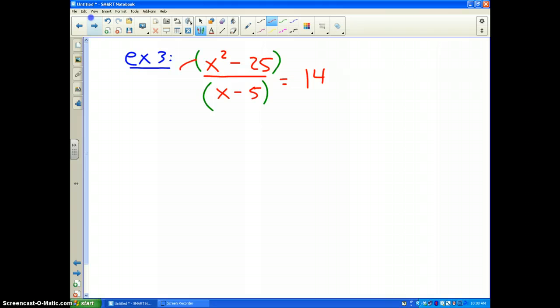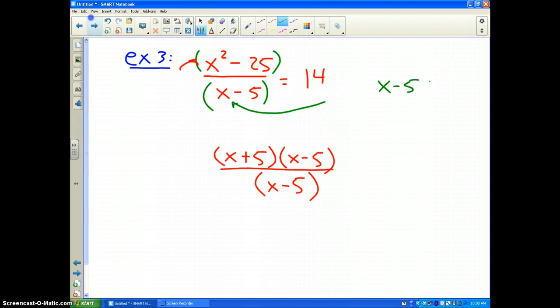I factor the numerator, which becomes x plus 5 and x minus 5. The whole thing over x minus 5. Oops, I forgot one very important thing. What can x not be? x minus 5 cannot be 0. So, therefore, x cannot be 5. Can't be 5.